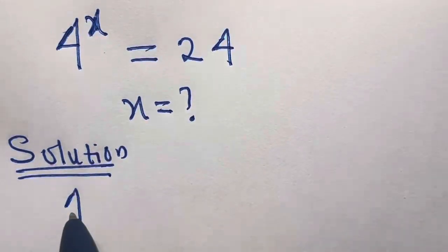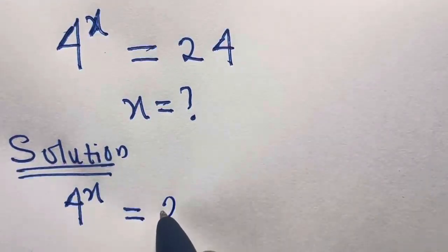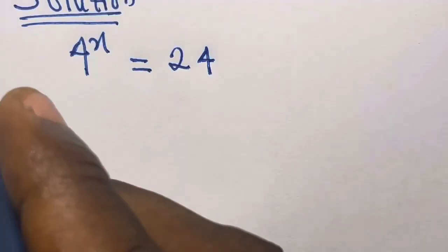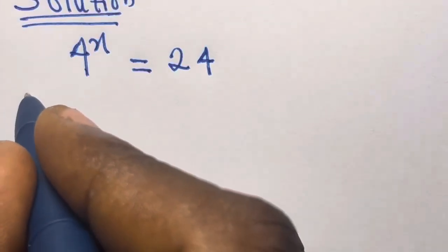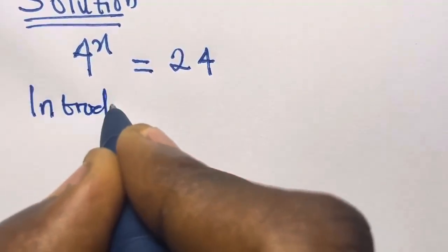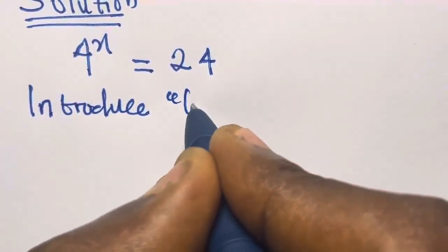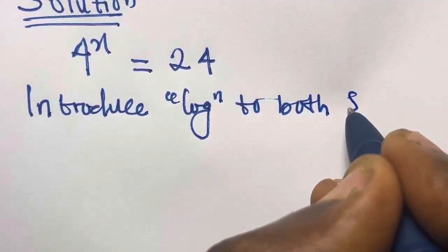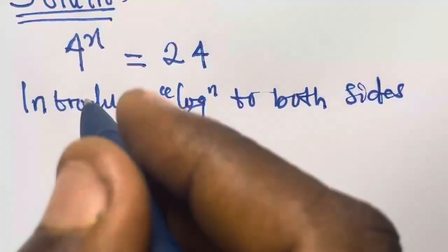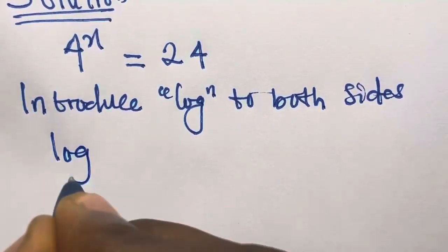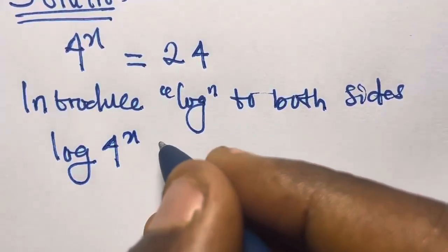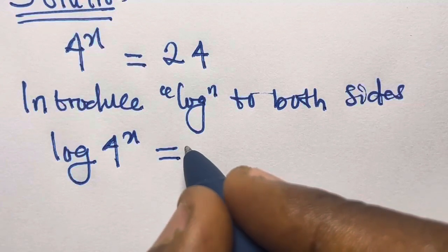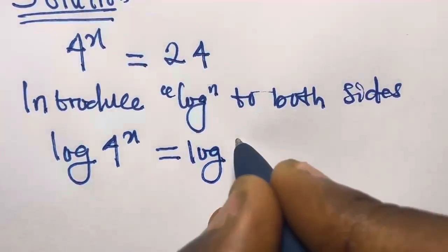We have 4^x equals 24. So from here we introduce log to both sides. So we have log(4^x) equals log(24).